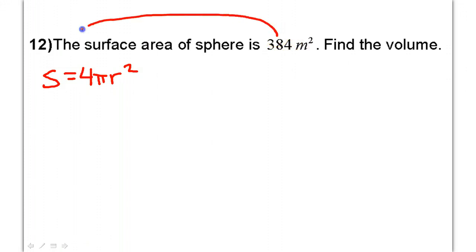I need to take this 384 and put it in for S. So that gives me 384 equals 4 pi r squared.